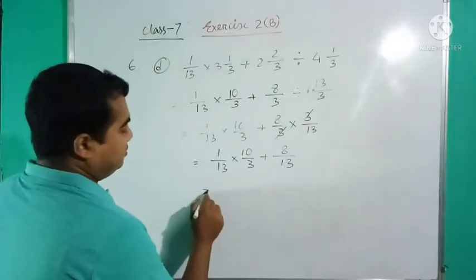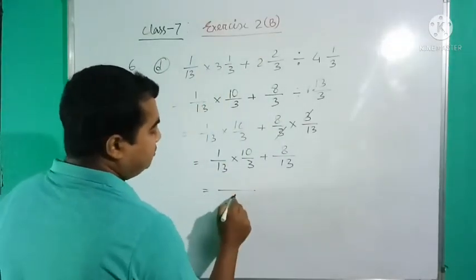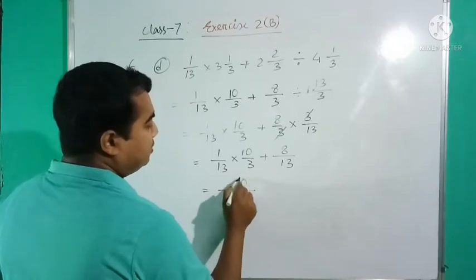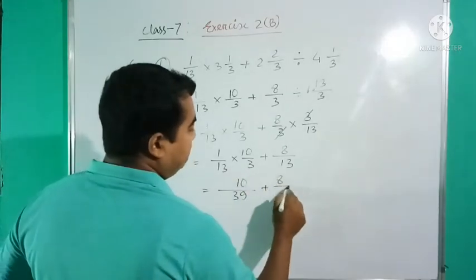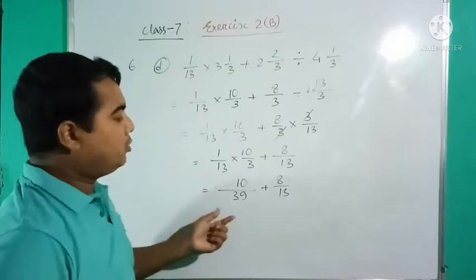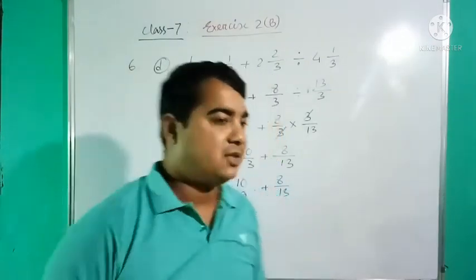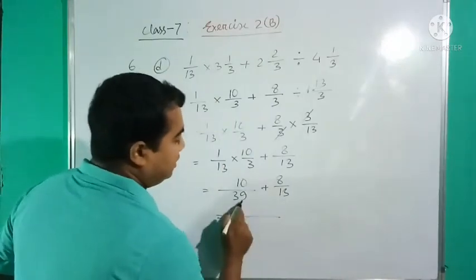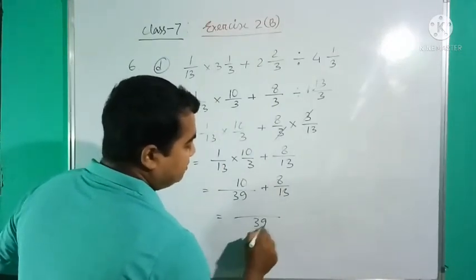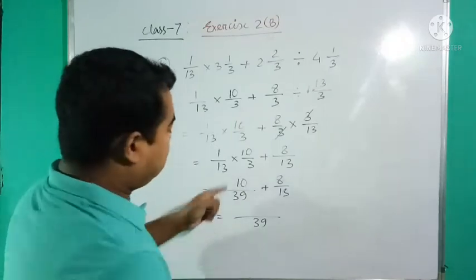After that, next is after division, multiplication. So do the multiplication. See, 13 times 3 is 39, 10 times 1 is 10, plus 8/13. Now we got two fractions. Now after multiplication, next is addition. So take LCM and do it.